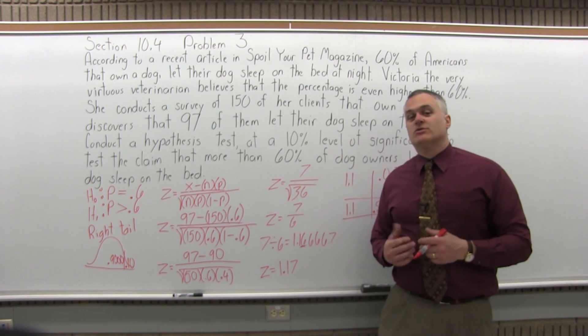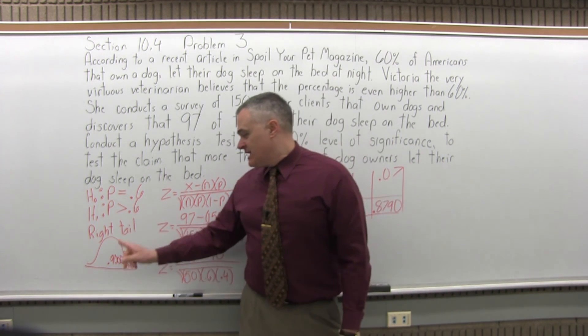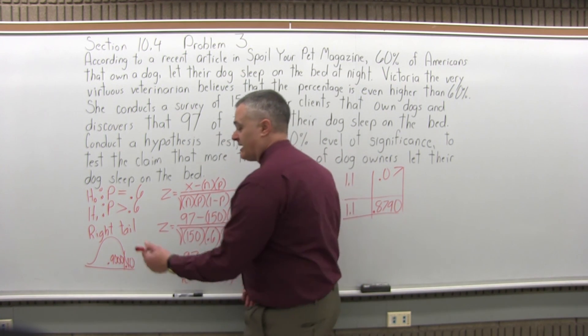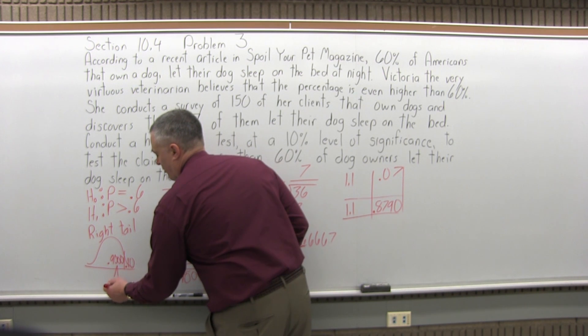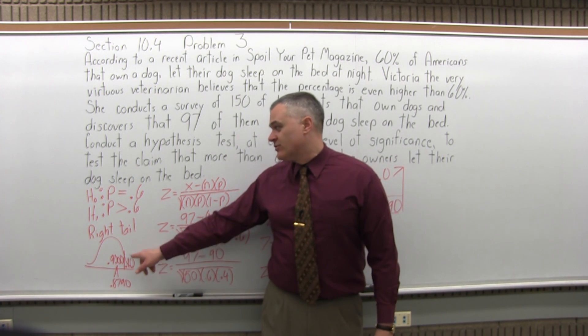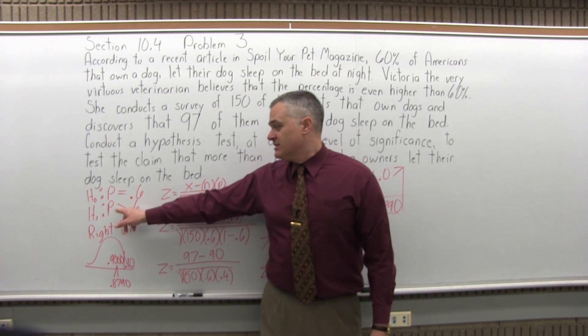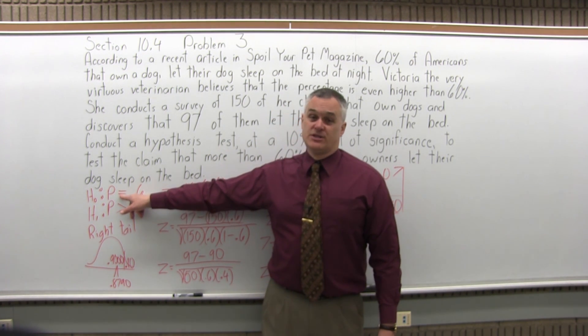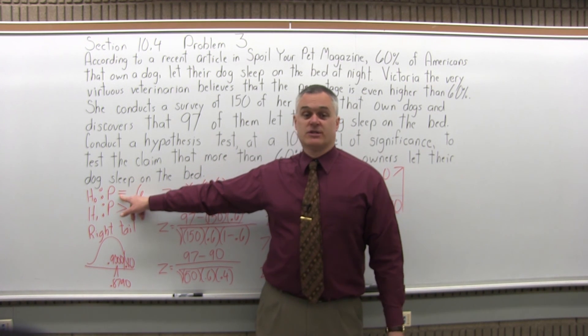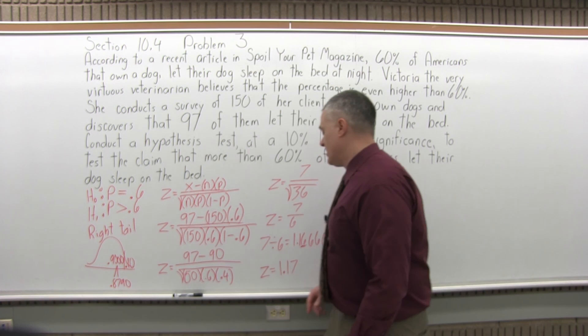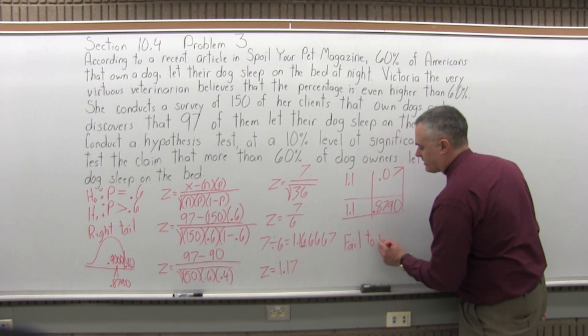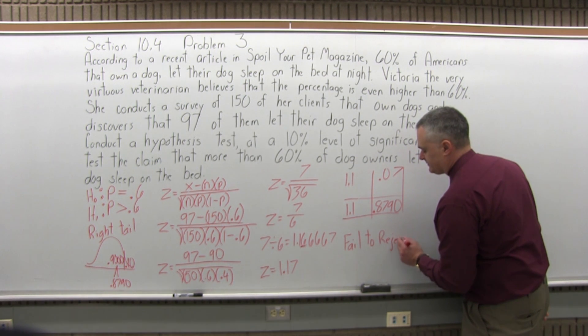Step 6, state your conclusion. Do you reject the null or fail to reject the null? The 0.879, did it go out into the critical region? It did not. We had to go past 0.900 to get into the critical region. That 0.8790 didn't quite make it. So, if you don't make it out into the critical region, then you fail to reject the null. Which means, if you fail to reject the null, you think the null is more likely to be true. So, it's more likely that the real percentage of people who allow their dog to sleep on the bed with them at night is 60%, just like the magazine claimed. The last step, step 6, would be fail to reject the null hypothesis. Thank you.